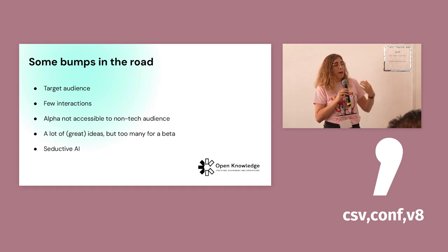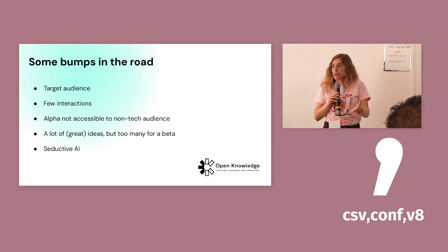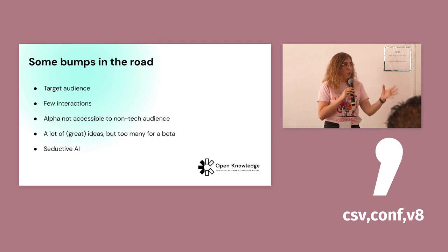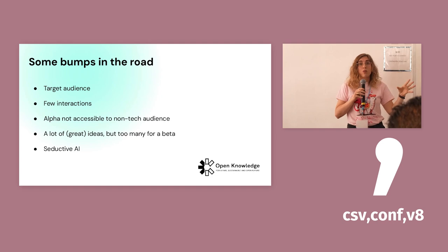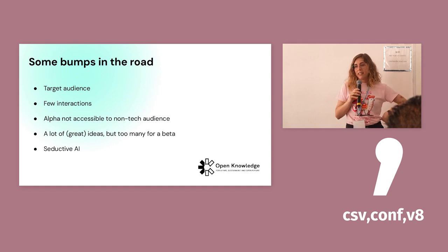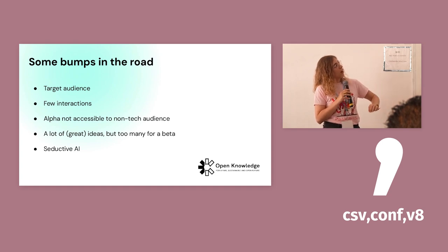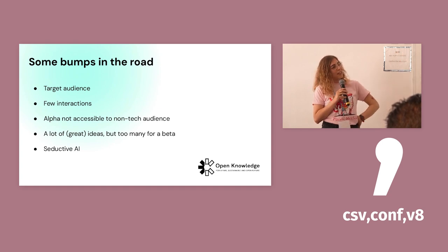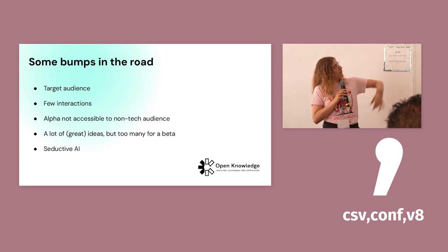Something else I wanted to mention — all of this comes from great intentions. We have been working with the Frictionless community for a very long time on issues of data publishing and data portability, so we had a lot of great ideas when we started this application. Maybe it was too much for the beta release, and the outcome was that the application was a bit bumpy, more than it would have been if we'd just focused on a few issues. And the last thing — the seductive AI, which can be problematic and complicated, but we didn't think about it at the time.